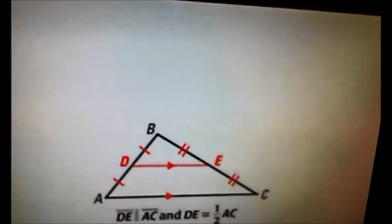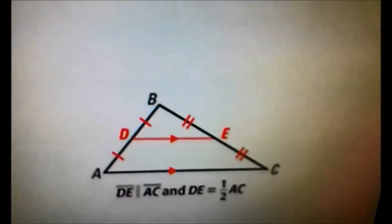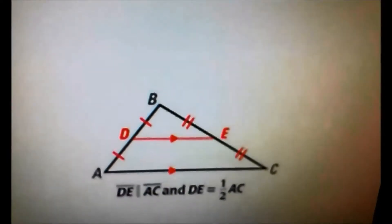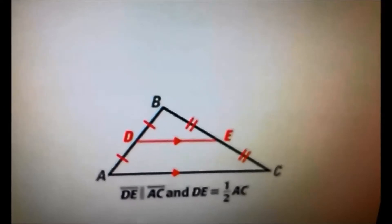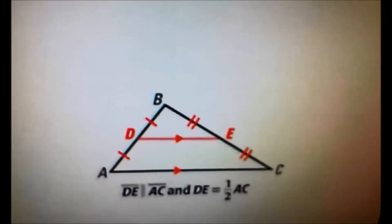This diagram is based on Dalen 5.1. Dalen 5.1 says the segment connecting the midpoints of the two sides of a triangle is parallel to the third side and is half as long as that side.